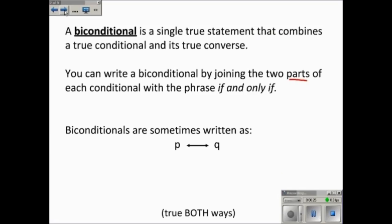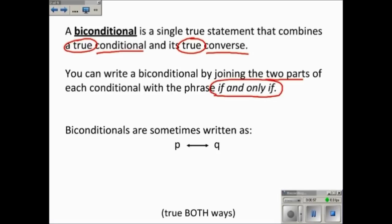A biconditional is a single true statement that combines a true conditional and its true converse. So when the conditional and the converse are both true, we can write it as a biconditional. The way that you write a biconditional is by joining the two parts — the hypothesis and the conclusion of the conditional — with the phrase 'if and only if.' Sometimes written IFF by some mathematicians, but in this class we'll typically write out 'if and only if.'